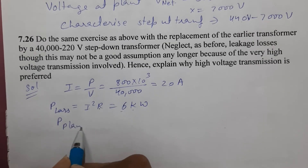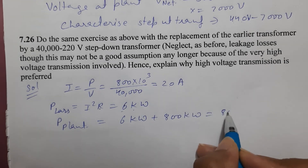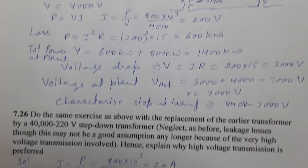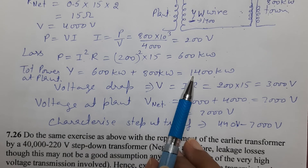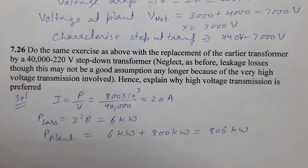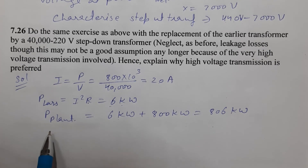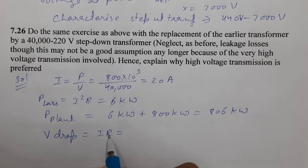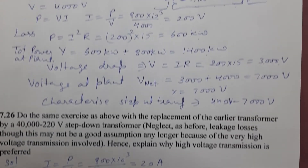The total power of the plant is now 6 kW + 800 kW = 806 kilowatts — compared to 1400 kilowatts in the first case. The voltage drop is also much less: V = IR = 20 × 15 = 300 volts, compared to 3,000 volts before. So both power loss and voltage drop are drastically reduced when transmission is at high voltage.